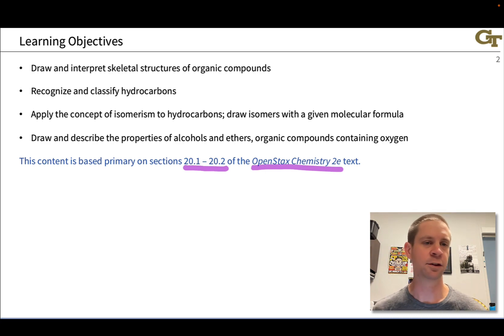So what are we going to be able to do at the end of this unit? We're going to learn how to draw and interpret skeletal structures of organic compounds, recognize and classify what are called hydrocarbons. Hydrocarbons contain carbon and hydrogen in some proportions, something like CnHm is the formula of a hydrocarbon containing carbon and hydrogen.